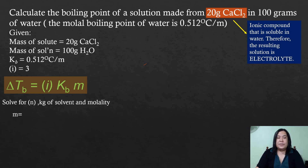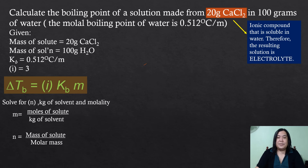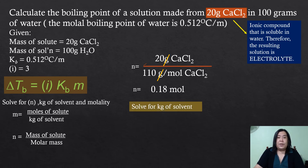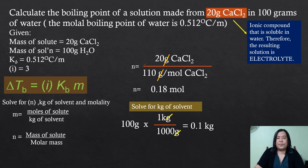First, solve for the number of moles of solute and the molality. The number of moles is equal to 20 grams of calcium chloride divided by 110 grams per mole (the molar mass of calcium chloride). Cancel the units and you get 0.18 mole. Then solve for the kilogram of solvent — since this is molality, all mass units must be converted to kilograms. For 100 grams of solvent, convert to kilograms to get 0.1 kilogram.